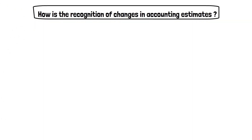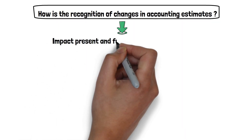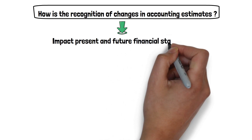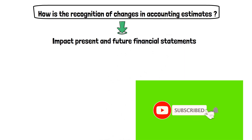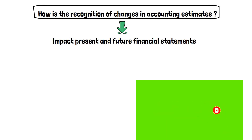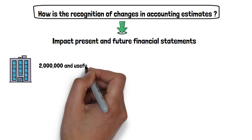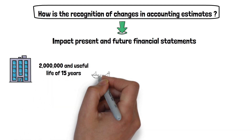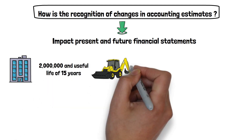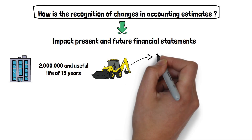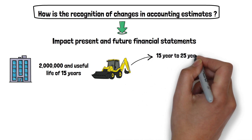How is the recognition of changes in accounting estimates? Accounting recognition of changes in estimates is simple because it's not necessary to affect prior accounting periods, unlike policy changes or accounting errors. In this example, an entity acquired a machine for 2 million with an initial useful life of 15 years. However, at the end of year 5, the useful life changed from 15 to 25 years.